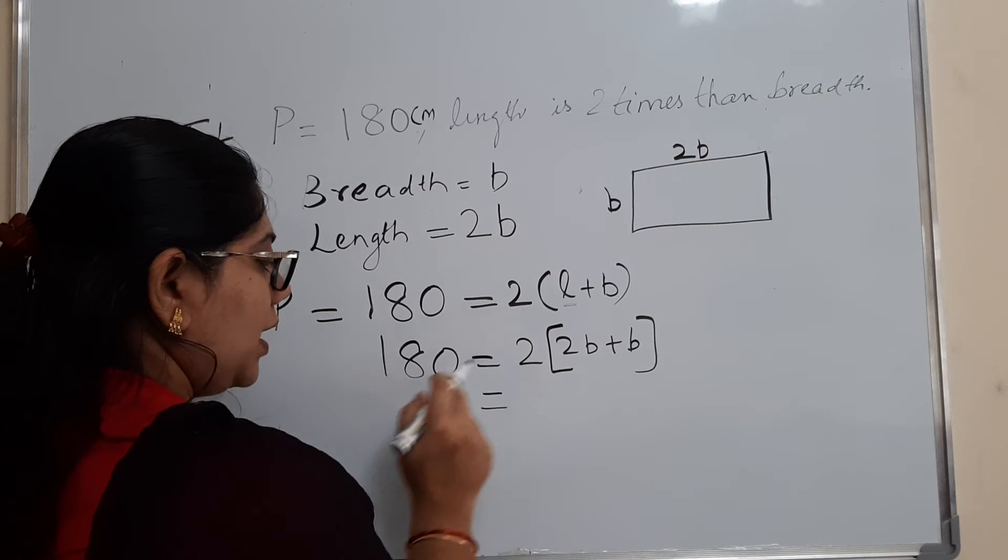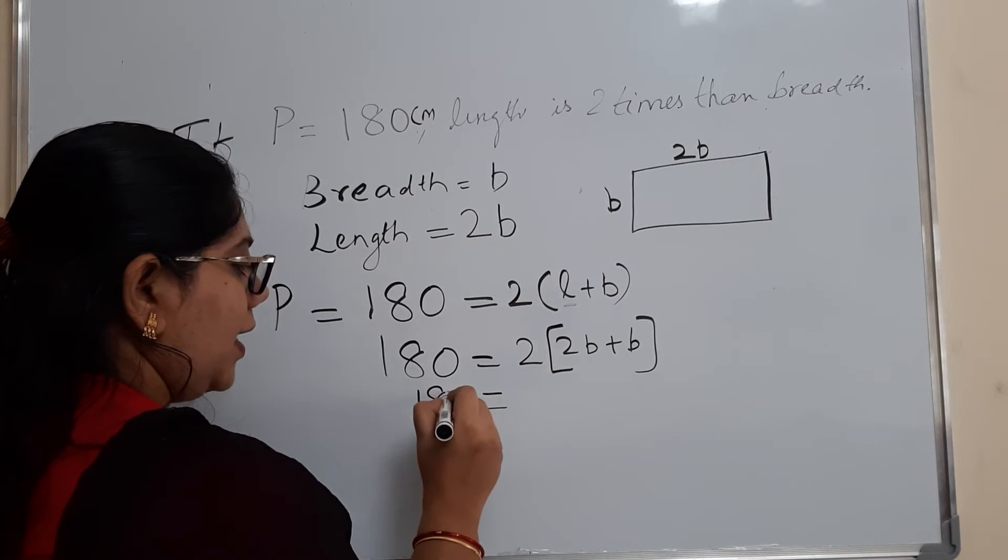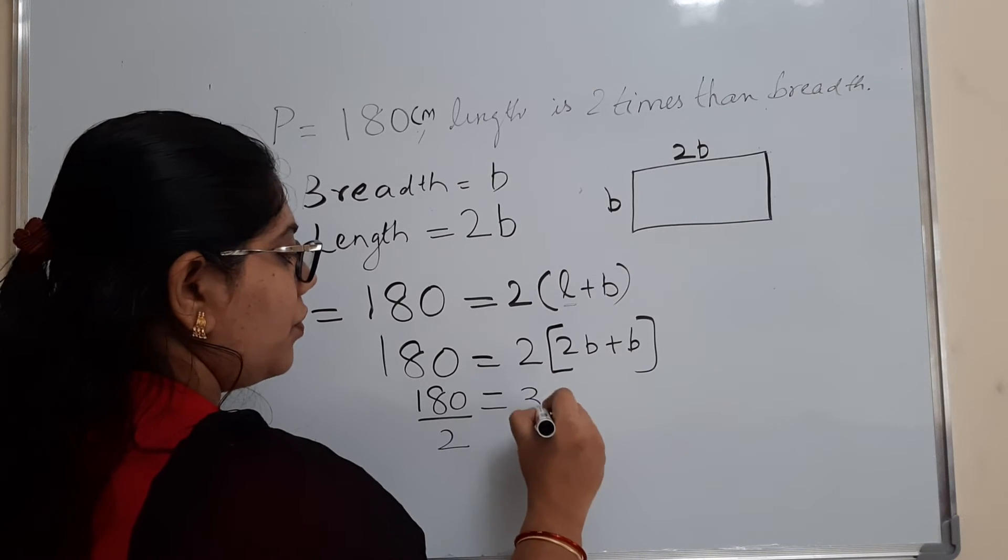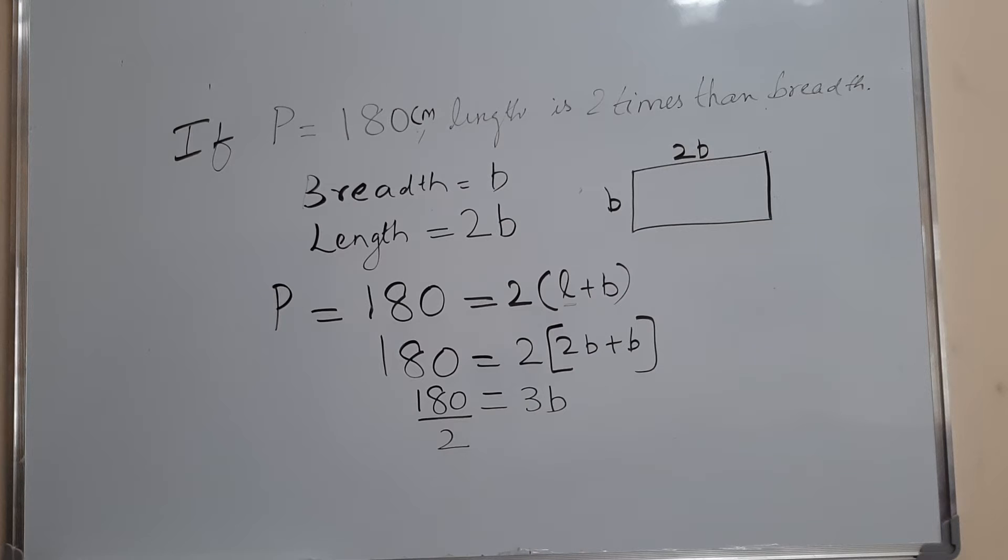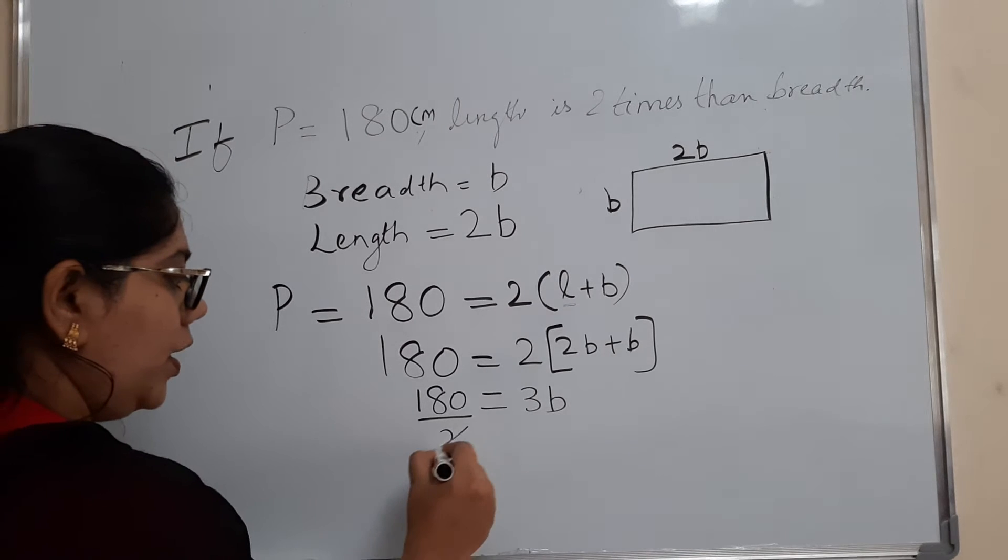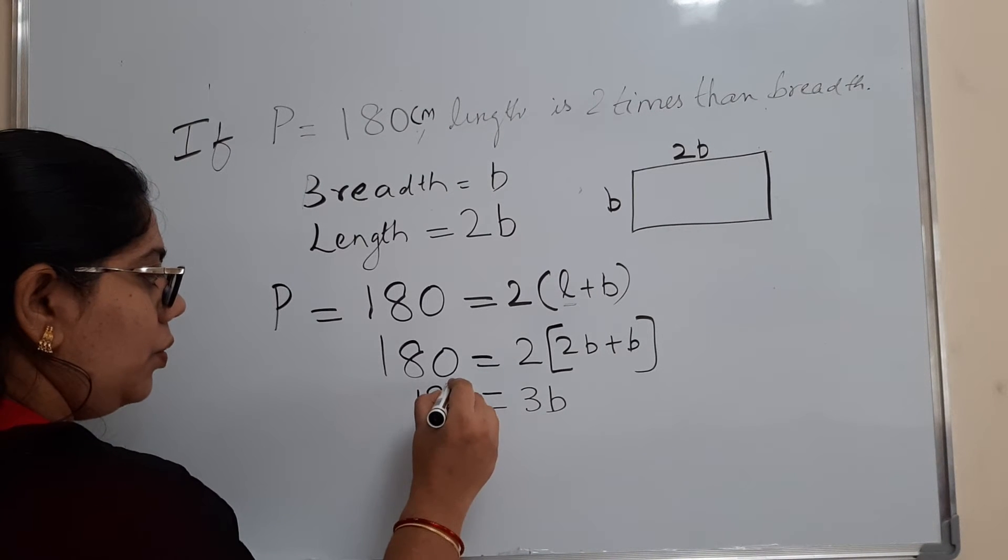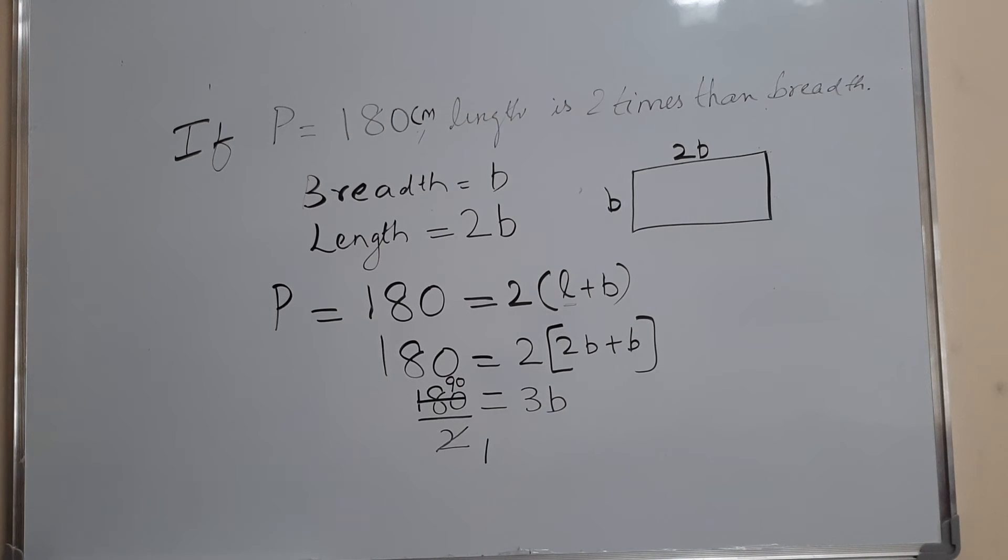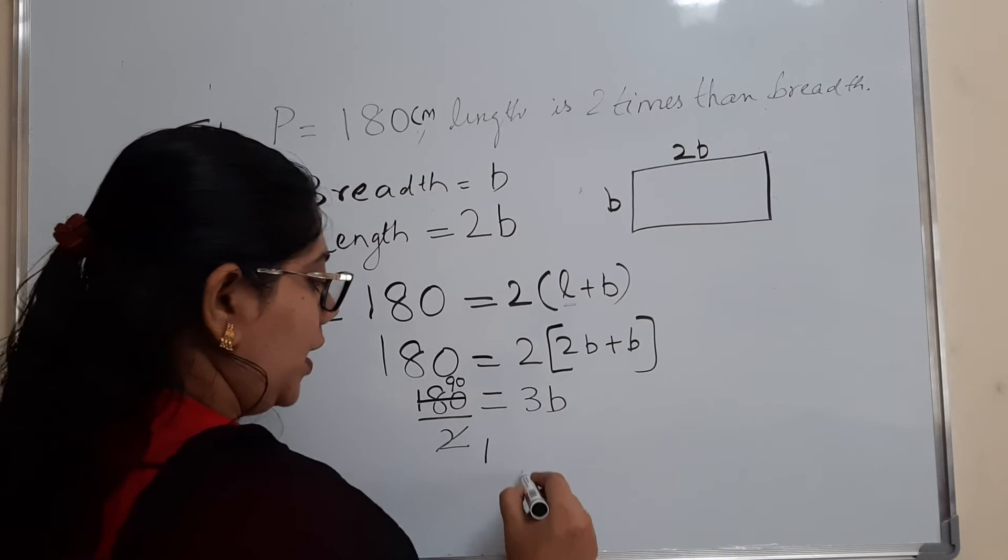This 2 will come down. So 180 divided by 2 is equal to 3B. Now 180 divided by 2 is what? So 1 into 2 is 2, 18 into 2 is 9, 0 into 2 is 0. So 90. So now we got 3B is equal to 90.